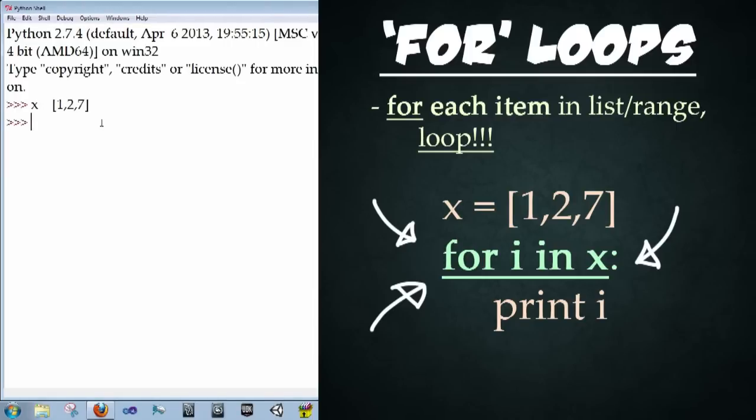Now we're going to type in for i in x, which says for each individual item within the list or range x, enter, print i. Enter, enter. And now look what happened. It printed out each individual value of x within that list separately. If we want to do any operations, we could perform those right there where that print i is.